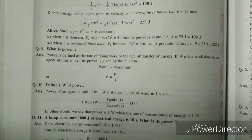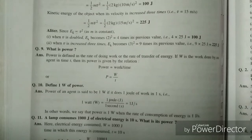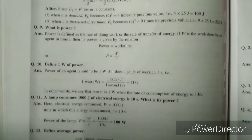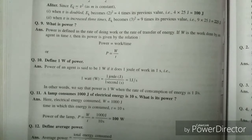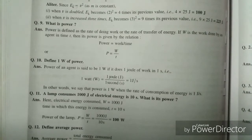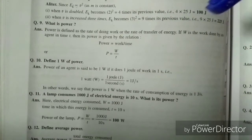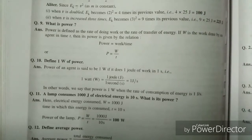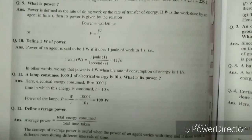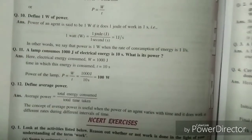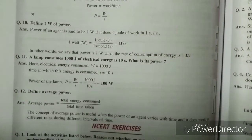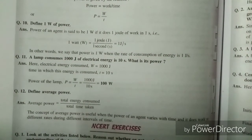Next numerical: a lamp consumes 1000 joule of electrical energy in 10 seconds. What is its power? Power equals work upon time, so our work is 1000 joule and time is 10 seconds. We easily get the power as 100 watt.